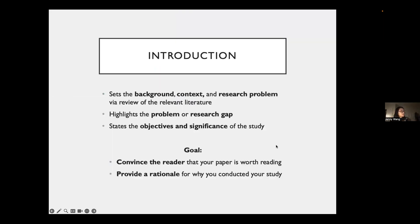The introduction sets the background context and the research problem via a review of relevant literature. The most important thing is to address the research problem. The background is the main topic of your paper — for example, in the exemplary study we're looking at osteogenesis imperfecta, called brittle bone disease, so the author starts by defining what that is. The context covers the current state of the topic and the issues at hand, which all informs ultimately your research problem — what's missing from the present knowledge base. At the end of your introduction, you need to state your objectives, your research questions, and the significance of your study: why should I care, why are you conducting the study, and why is it worth my time to read?